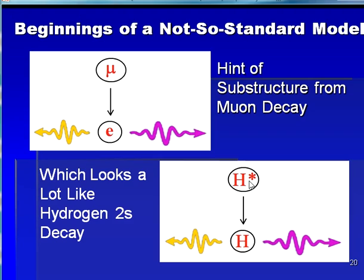Hydrogen excited to its 2s state decays into its ground state and two massless photons. Now we know that hydrogen is composed of a positive nucleus and an orbiting electron, and that it is bound together by a force mediated by the photon. Hence, as a starting point for a new model of nature, we should propose that the muon and electron may be composite particles composed of two sub-particles which are bound by a force carried by the neutrino. To me, this seemed quite obvious — when you look at these two reactions, you can see clear evidence that there may be a similar underpinning.